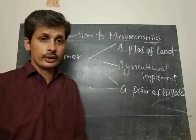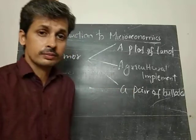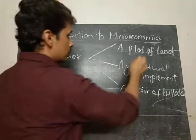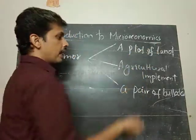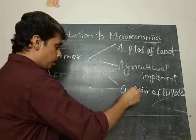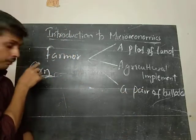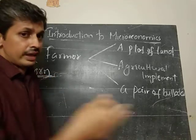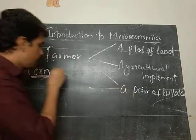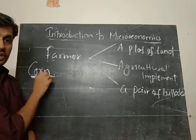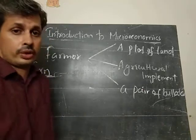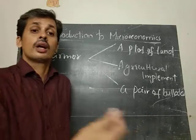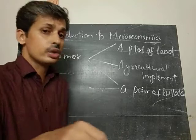He is cultivating some crop. Take here, he is cultivating corn. So using the resources — the plot of land, agriculture implements, and a pair of bullocks — he is producing corn. After producing corn, he consumes a portion of the corn and the rest he is exchanging, and he gets some goods and services. In this way, he is satisfying his wants.